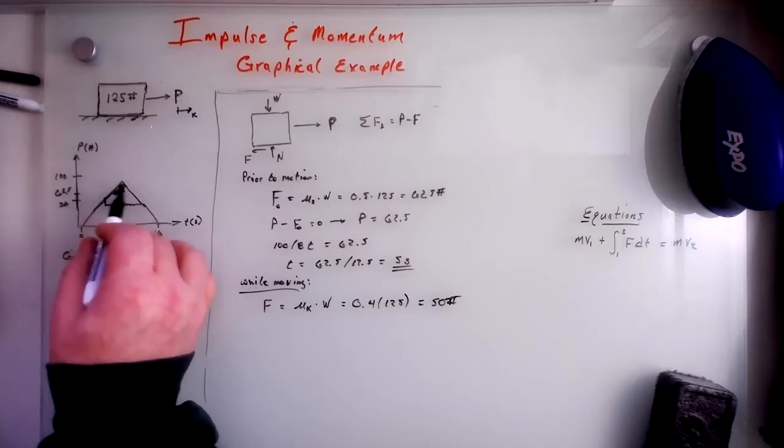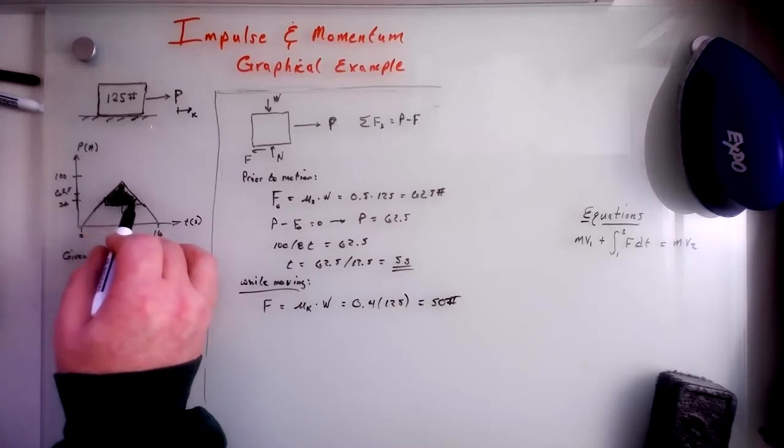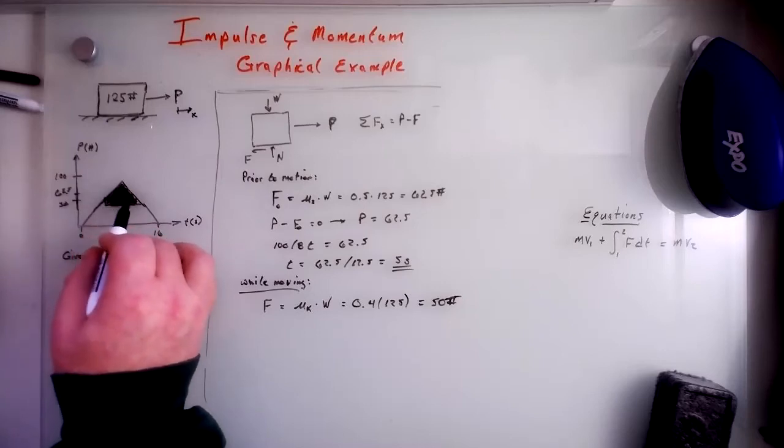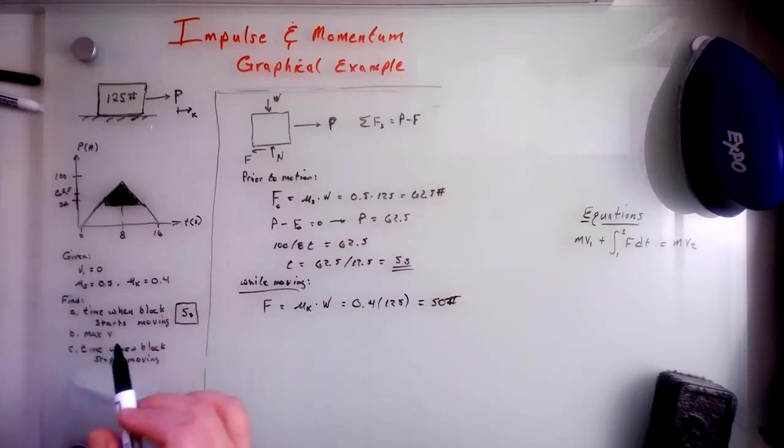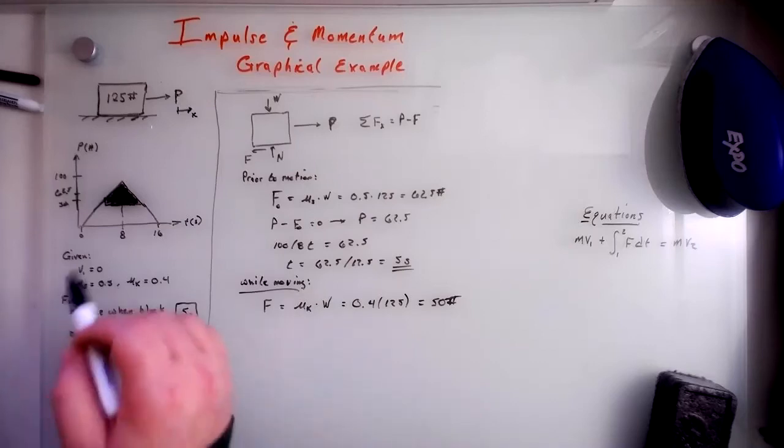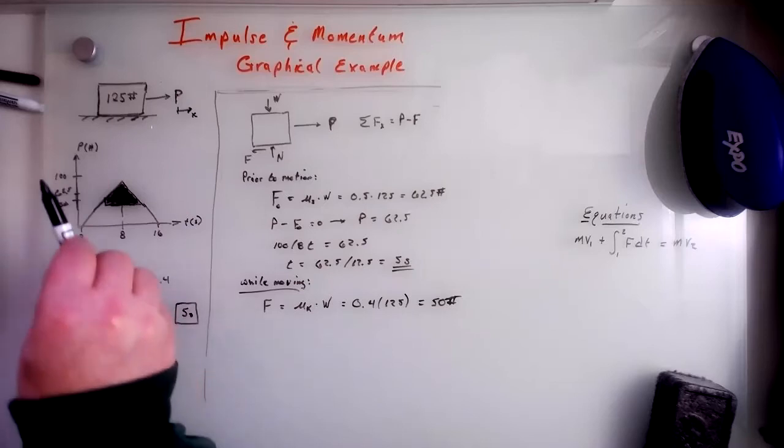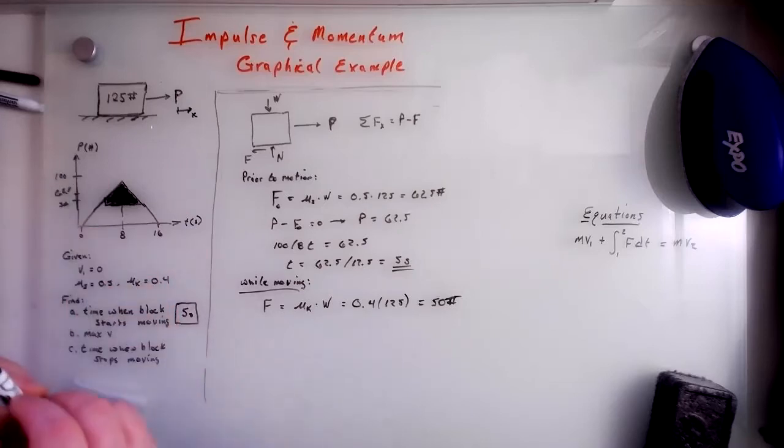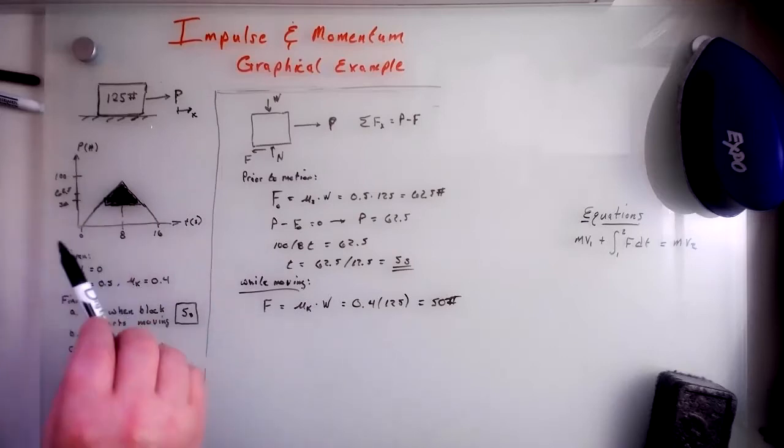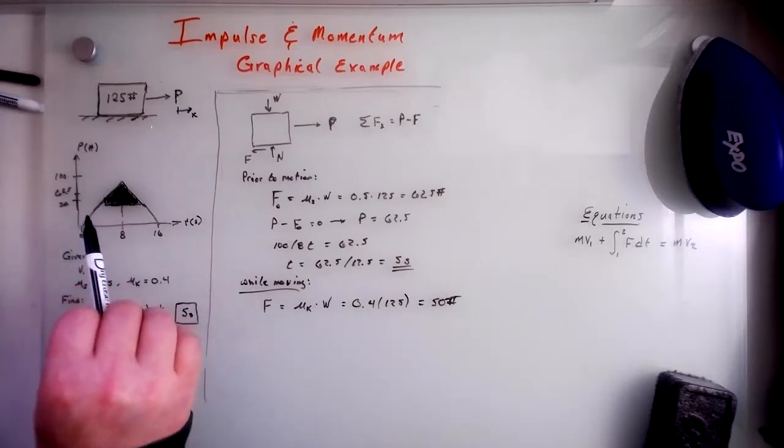So this part of this pyramid represents the part of p that accelerates the block, right? If it's less than 50, then it's not overcoming the frictional force and the block is decelerating. So then we could say just by inspection that everything from here to the left is not contributing to motion at all.